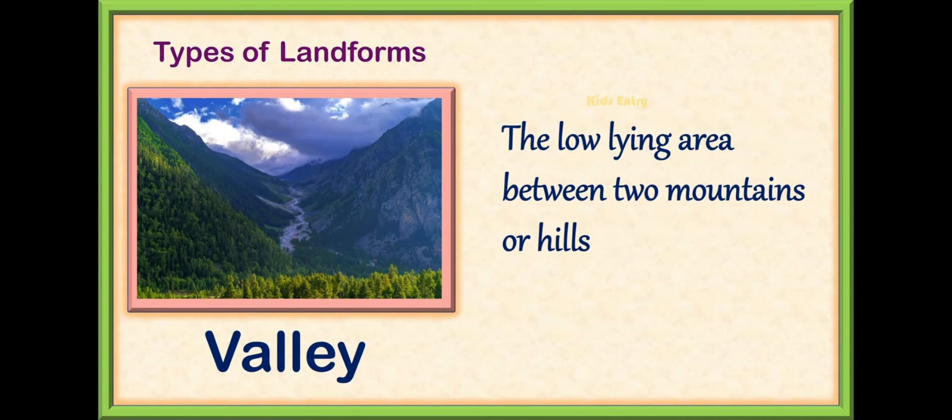The next type of landform is valley — the low-lying area between two mountains or hills.